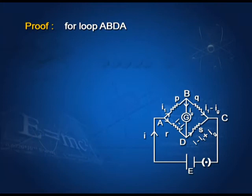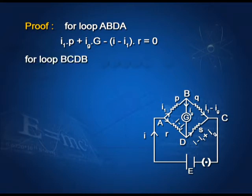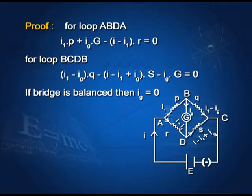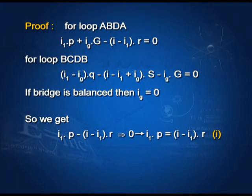Let's study the proof. For loop ABDA: I1·P + IG·G − (I − I1)·R = 0. For loop BCDB: (I1 − IG)·Q − (I − I1 + IG)·S − IG·G = 0. If the bridge is balanced, then IG = 0. So we get I1·P = (I − I1)·R — equation number 1.